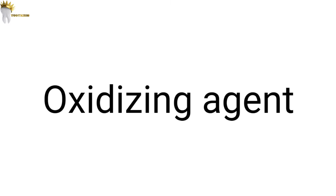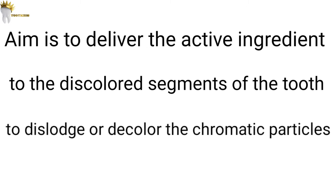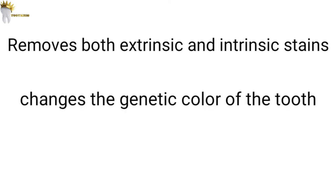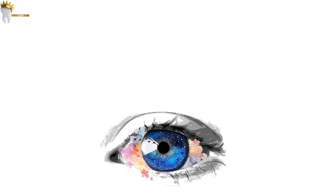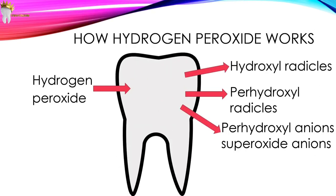The bleaching process uses an oxidizing agent that must reach sites within enamel and dentine to allow a chemical reaction to occur. The aim is to deliver the active ingredient to the discolored segments of the tooth to dislodge or decolor the chromatic particles. Bleaching removes both extrinsic and intrinsic stains, as well as changes the genetic color of the tooth. Just like people have different eye color, people are born with a specific tooth color — there is a limit to how white a tooth will become, and this differs from patient to patient.